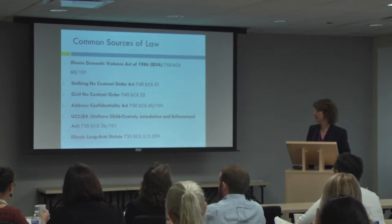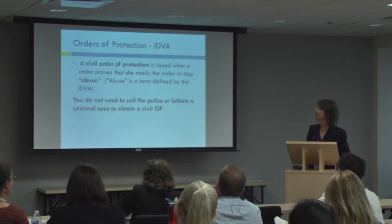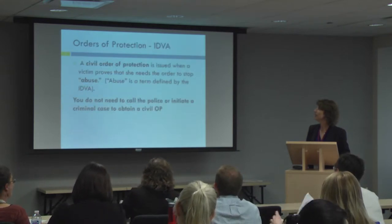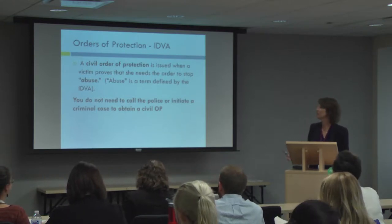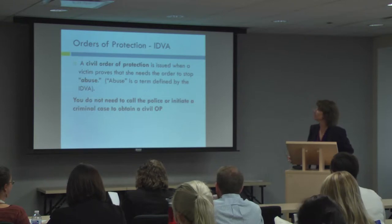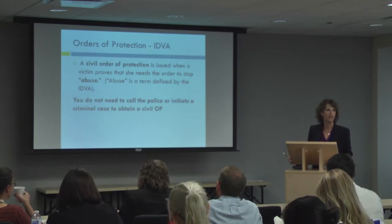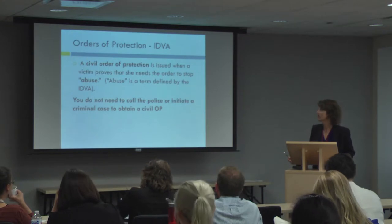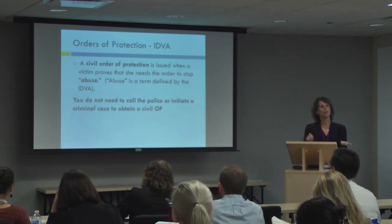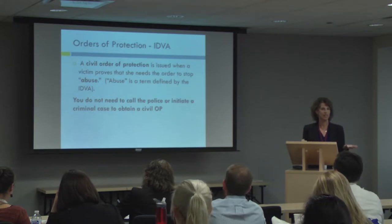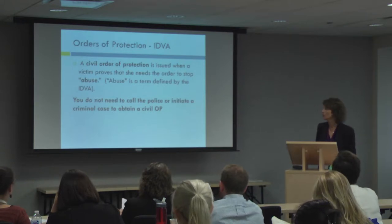I will talk a little bit about jurisdiction, but we'll go over it briefly and I will not bore you with the details of the UCCJEA, although Benna gave a two-hour presentation just on that statute. A civil order of protection is issued when a victim proves that she needs a domestic partner to stop abusing her, but abuse is a term of art — it's defined by the statute. So we're going to go through what it means to be abused.